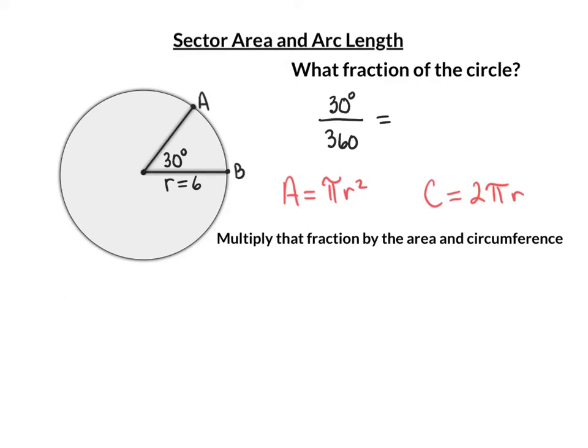Sector, area, and arc length. What you're going to be doing is finding the area of a section of a circle called a sector. In this circle, the sector is 30 degrees. You're going to find the area of this region right there.